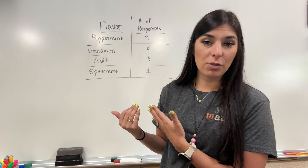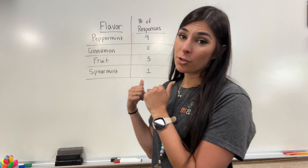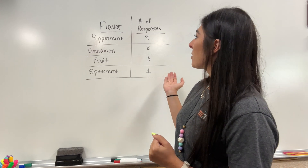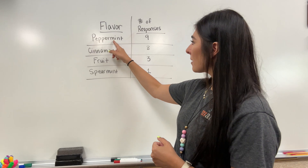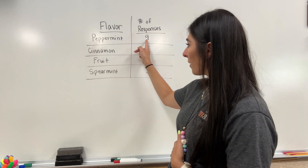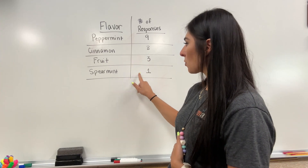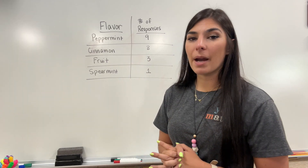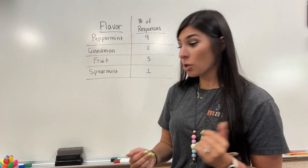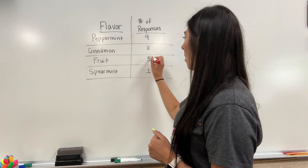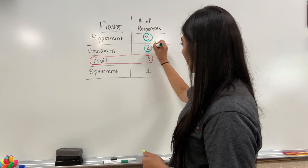Remember, you can use ratios to compare multiple responses — it does not just have to be one thing and another thing. So let's look at this table. I asked my students which flavor of gum they liked best. So we are going to be comparing fruit to everything else.